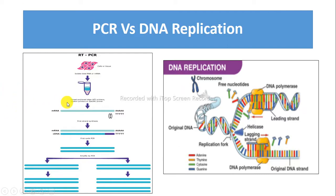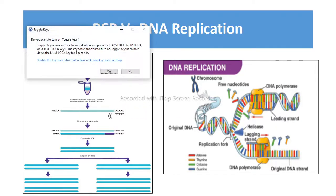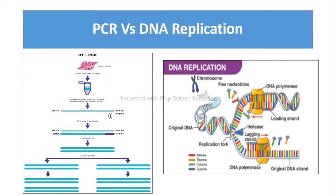PCR uses DNA primers, whereas DNA replication uses RNA primers which are synthesized by primase. The main goal of PCR is to produce an exponential number of copies of a single DNA fragment, and the main goal of DNA replication is to copy the whole genome at once.